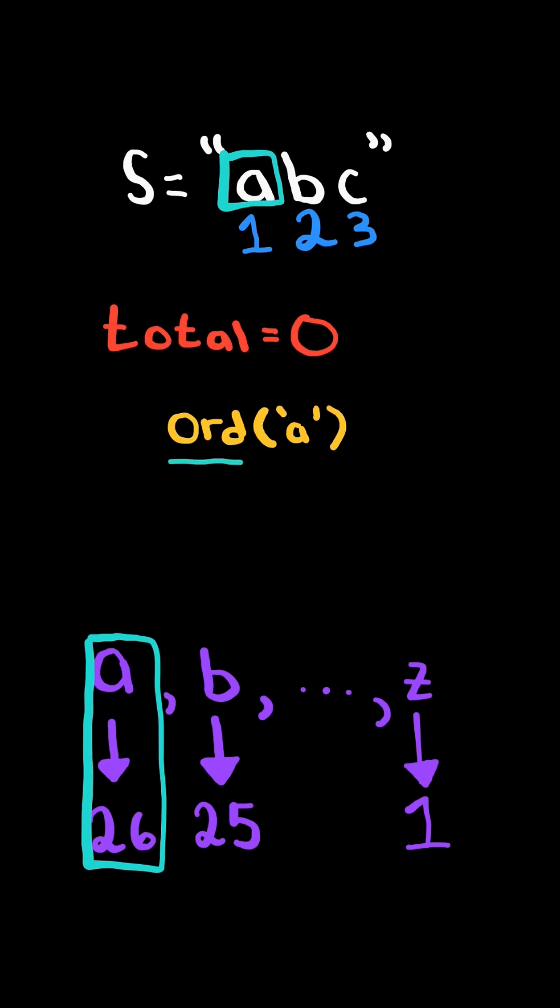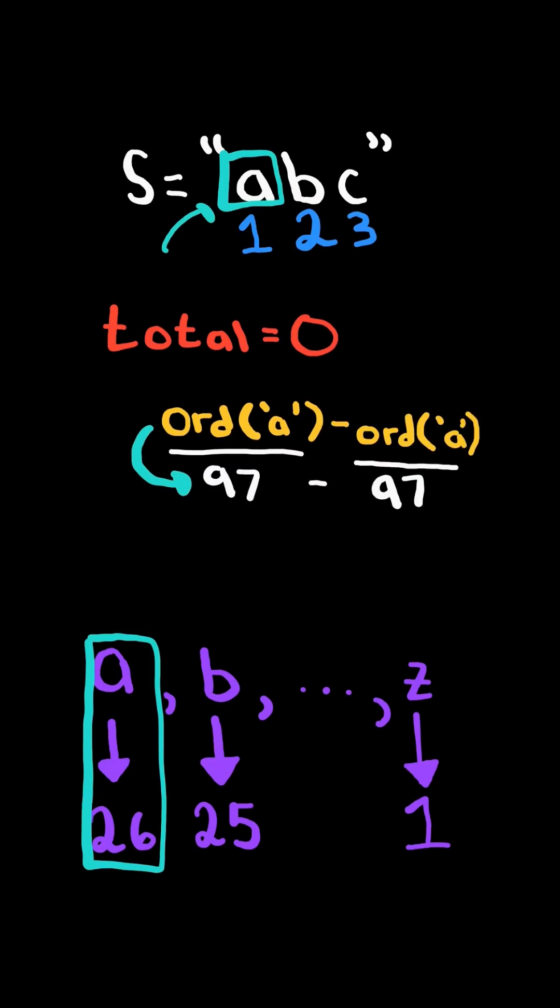We will use Python's built-in ord function on the character we are on. This returns the ASCII value of the character. We then subtract this by the start of the alphabet, which happens to be A,